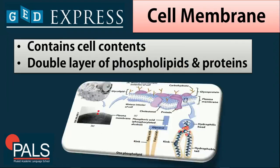We begin with the first organelle, which is the cell membrane. A cell membrane contains cell contents such as a double layer of phospholipids and proteins, and it regulates what comes in and what goes out of the cell.